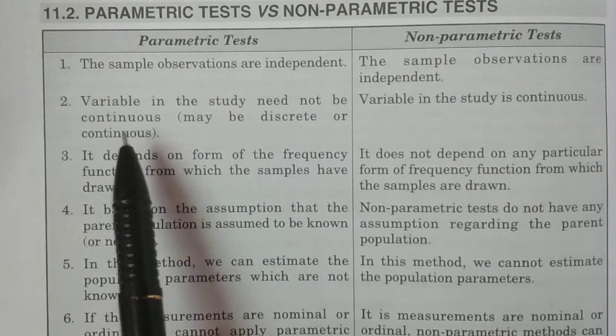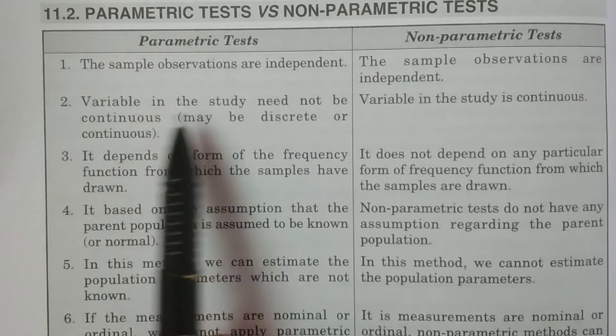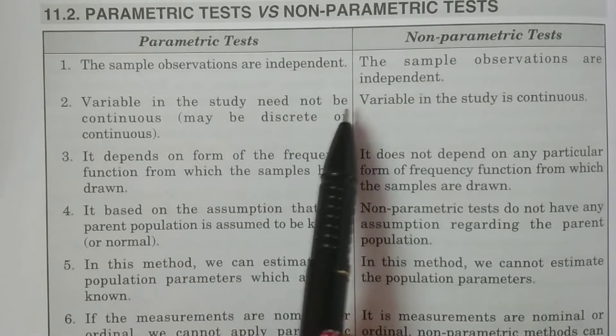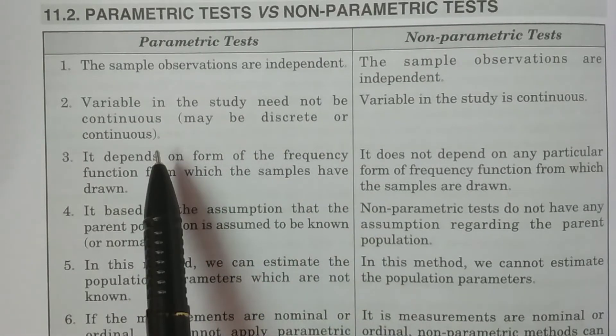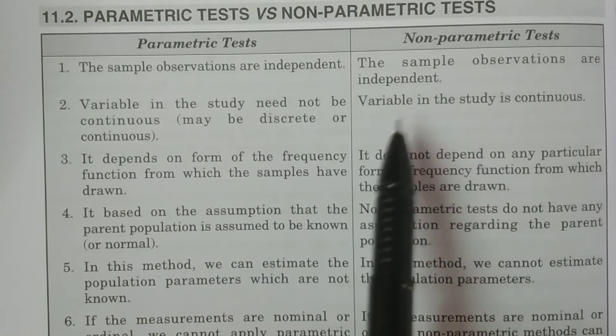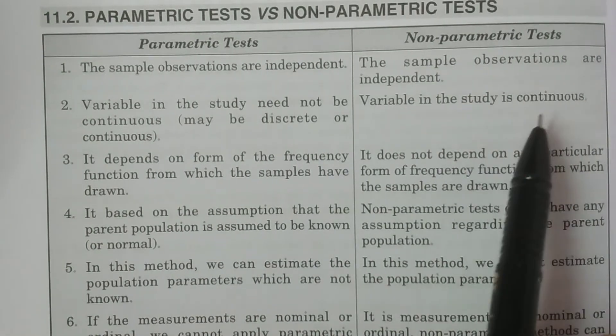The next point for the parametric test: variables in the study need not be continuous — they may be discrete or continuous. Whereas in the non-parametric test, the variable in the study must be continuous.